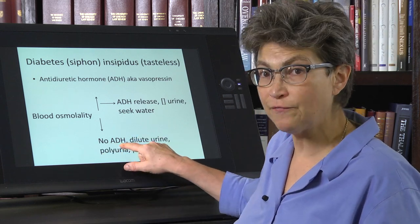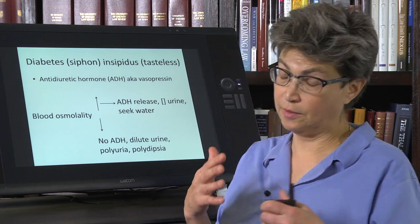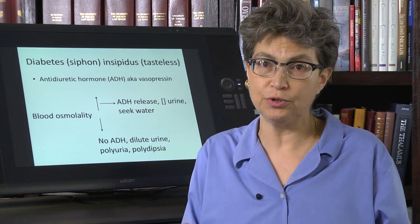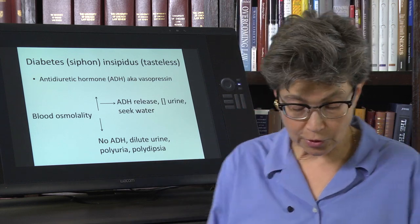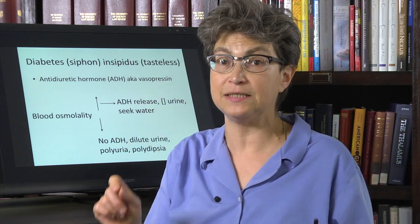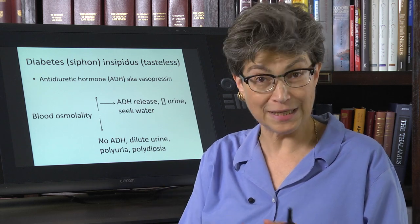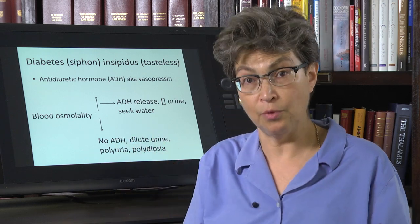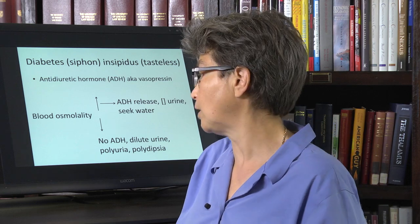In the case where there is no ADH — typically because it has been damaged by something such as surgery — the urine will always be dilute. The person will always be thirsty, always drinking, and always going to the bathroom. This is a form of diabetes — not diabetes mellitus, but diabetes insipidus. The difference is that the urine that comes out is insipid, basically water, whereas in diabetes mellitus, the urine is sugary because sugar is not being processed correctly.